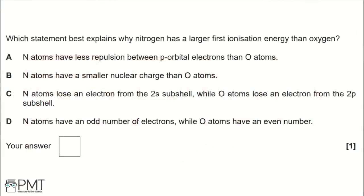Which statement best explains why nitrogen has a larger first ionisation energy than oxygen? A: Nitrogen atoms have less repulsion between p-orbital electrons than oxygen. B: Nitrogen has a smaller nuclear charge. C: Nitrogen loses an electron from the 2s subshell while oxygen loses from 2p. D: Nitrogen has an odd number of electrons while oxygen has an even number.